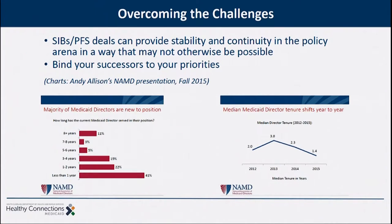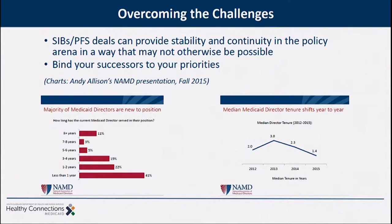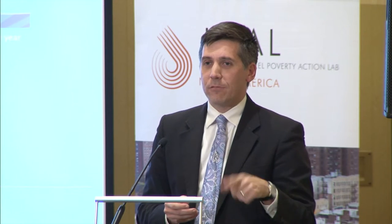There's a guy named Andy Allison who was Medicaid director in a couple of states. He went and did a study to look at tenure and compensation structure for Medicaid directors, and he found that right now the median tenure for Medicaid directors is in the neighborhood of 18 months. I focused on Medicaid for the same reason Dillinger and Bonnie and Clyde used to rob banks — because that's where the money is.